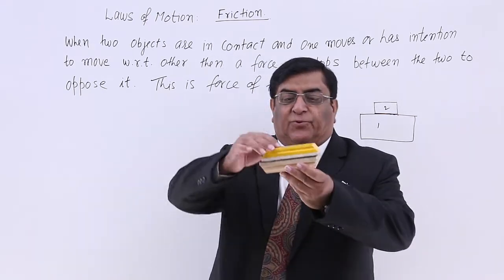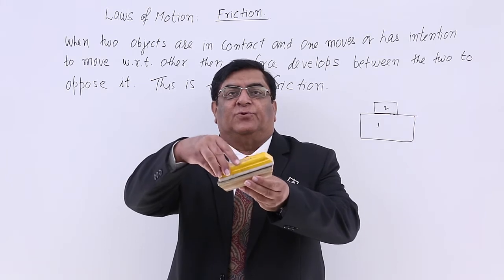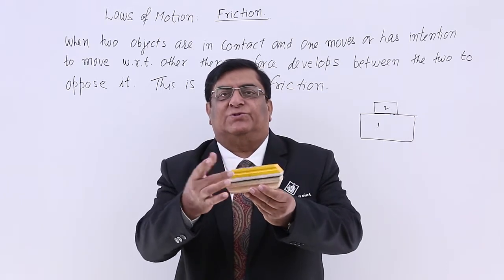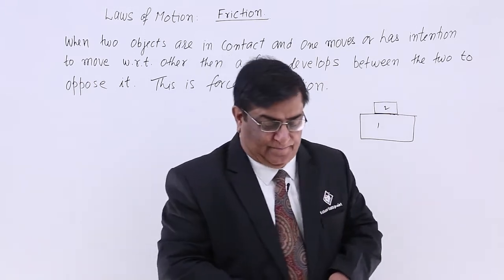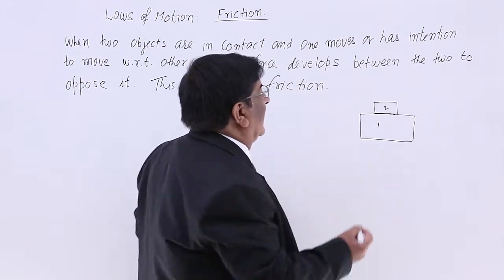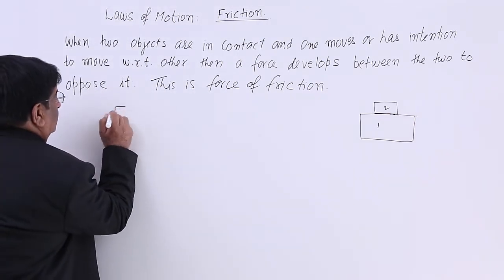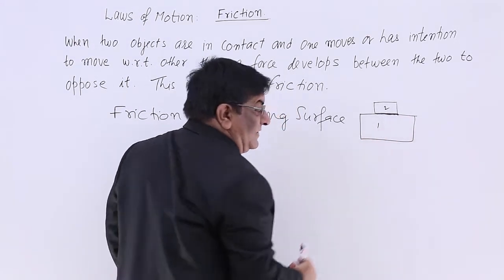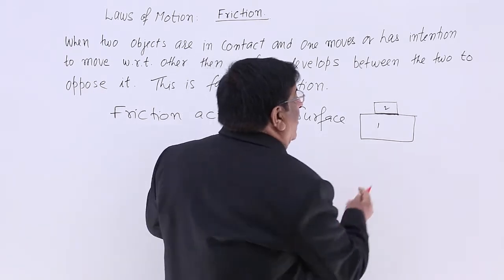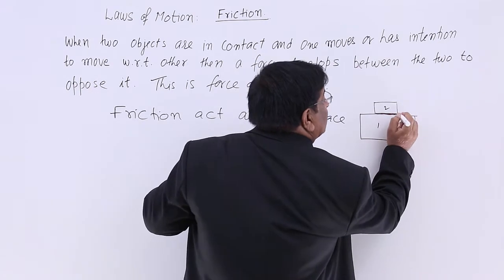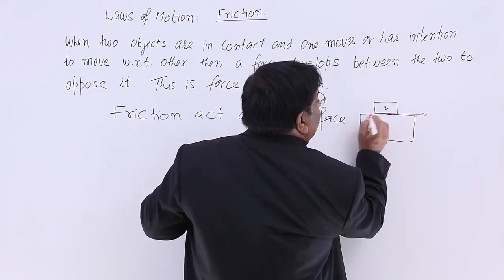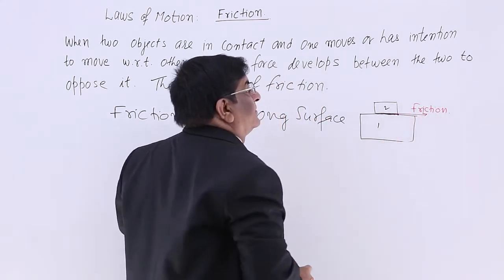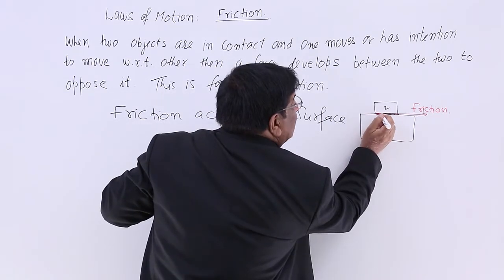So there is a force acting between these two surfaces that are in contact, and that force is friction. This force acts on every point of the surface, and the direction of force is along the surface — this is the direction of frictional force, acting at all these points.